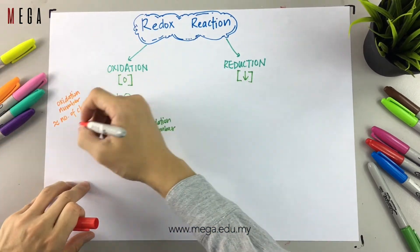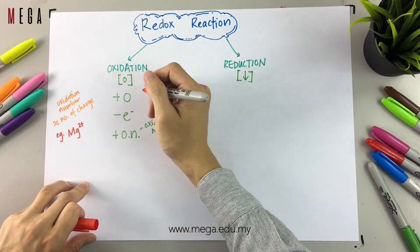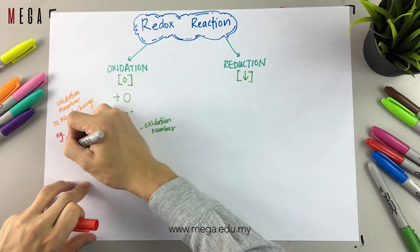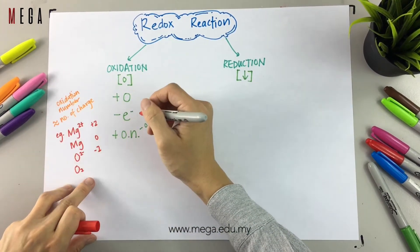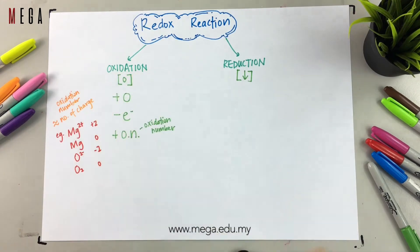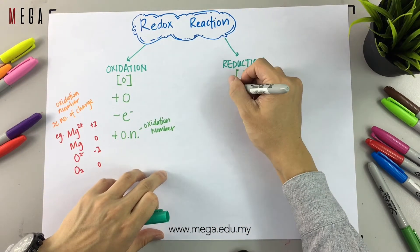For example, you have magnesium ions, 2 positive. Therefore the oxidation number is positive 2. Magnesium atoms, no charge, zero. Oxide ions, 2 negative. Oxygen molecules, no charge, therefore it is zero.